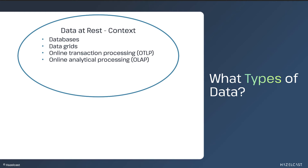Data at rest is stored data, such as data in a database or an in-memory data grid. Your application may search the data, update the data, or combine data from multiple sources. It may even create the data. But the data itself is essentially static, stored in-memory or on-disk for future reference.